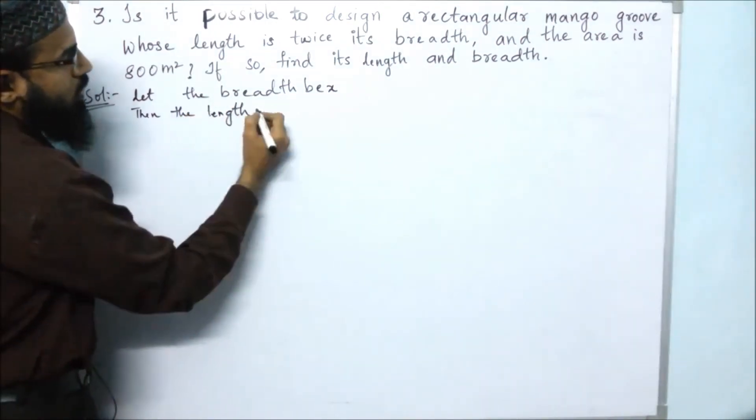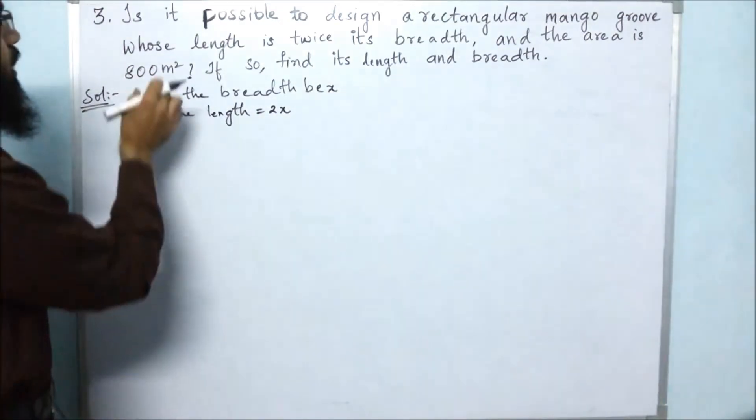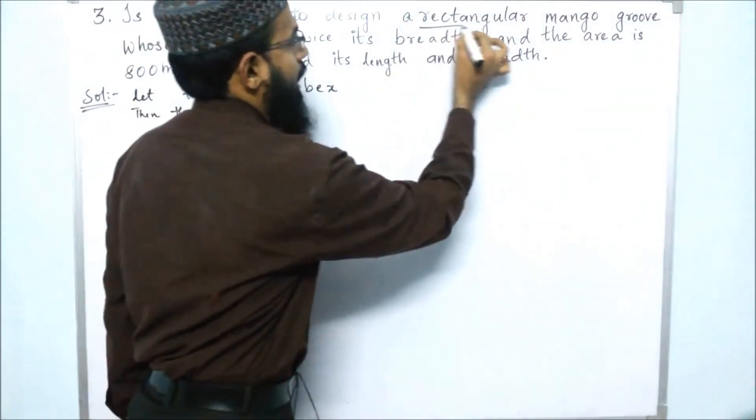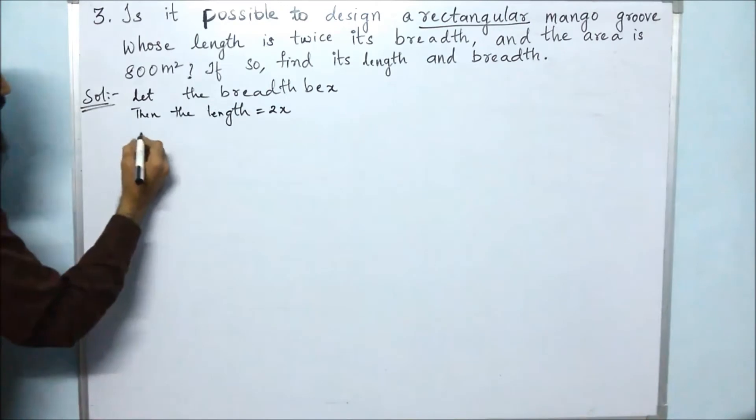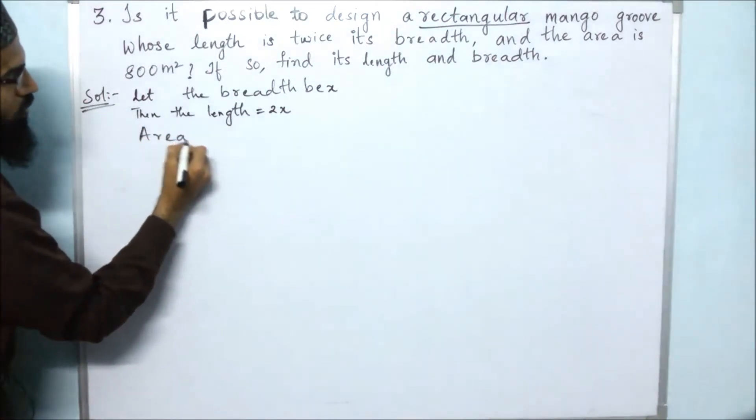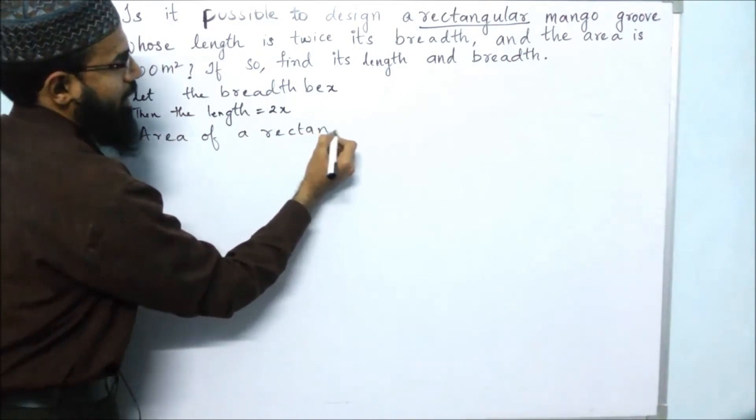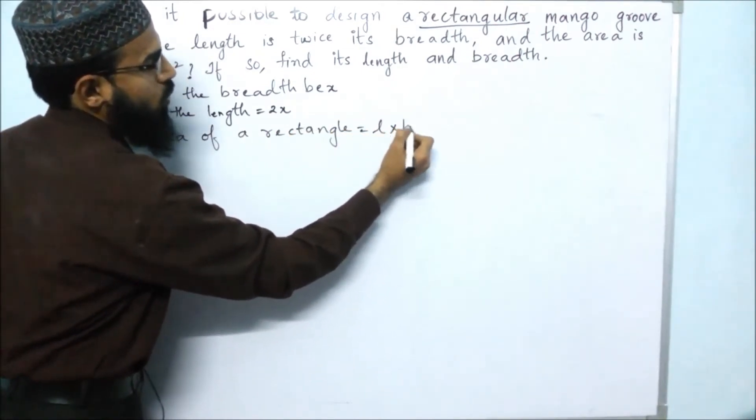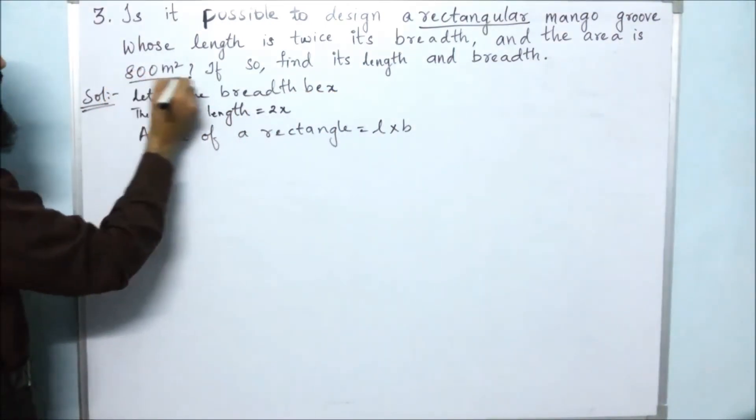They have given the area. We know that area of a rectangle is length into breadth. They have already given that the area of the rectangle is 800 square meters.